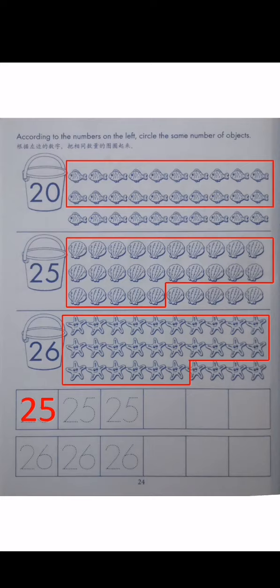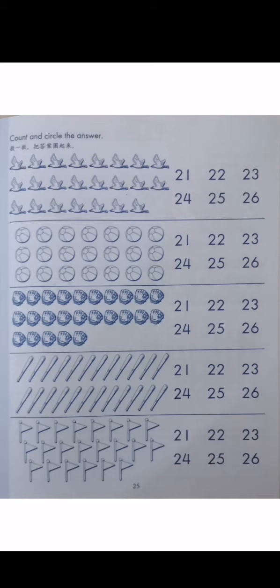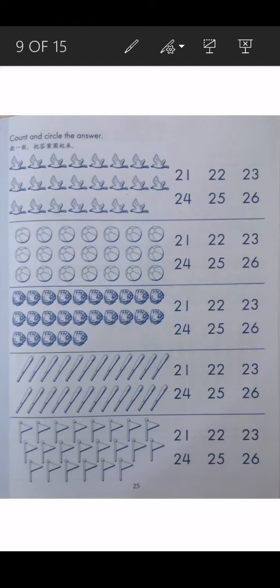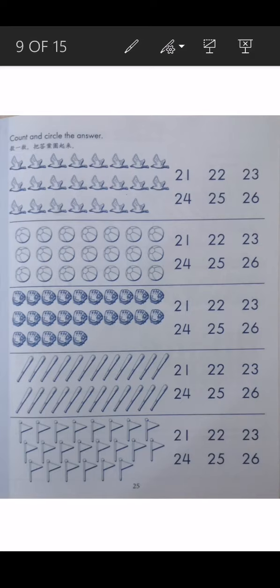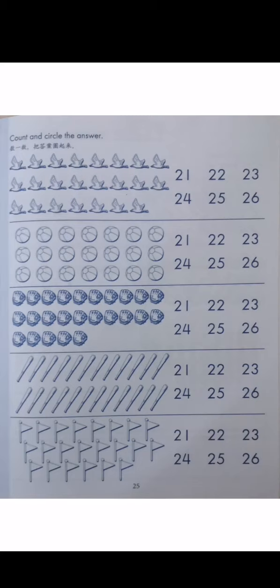Let's look at page 25. Count and circle the answer. Children, let's look at the first one. 1, 2, 3, 4, 5, 6, 7, 8, 9, 10, 11, 12, 13, 14, 15, 16, 17, 18, 19, 20, 21, 22, 23. Please circle 23.